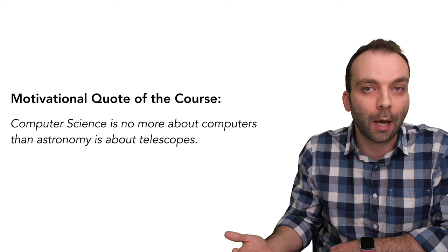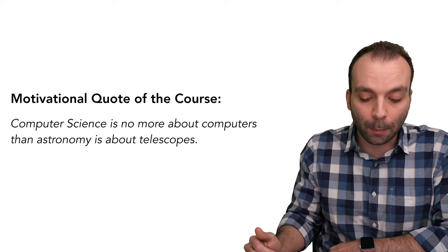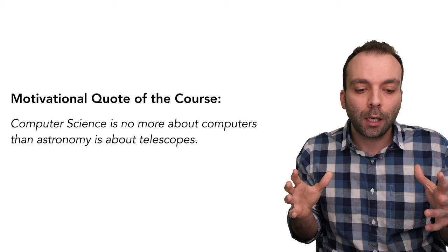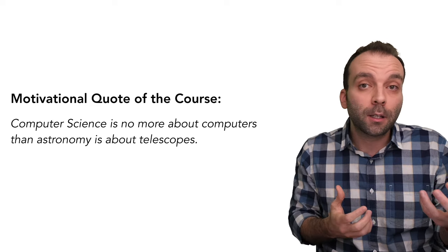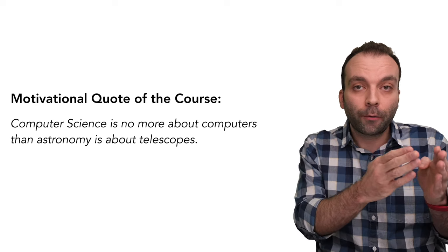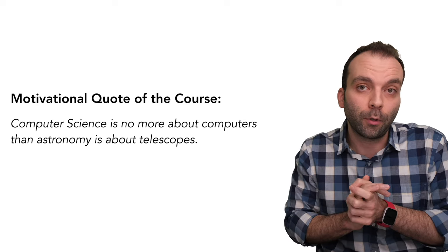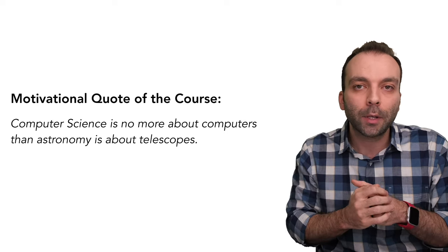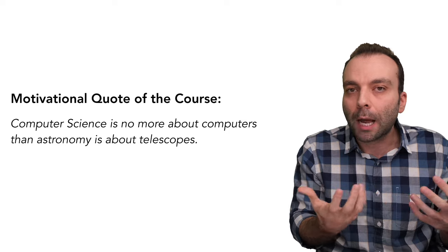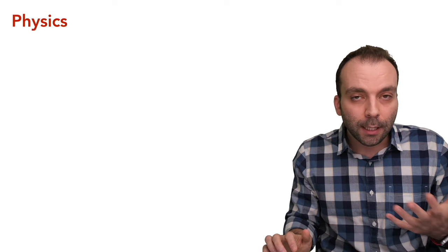This raises the question: if computer science is not really about computers, what is it about? It's not about our laptops, phones, or tablets — so what is it really about? To answer that, I'm going to draw a comparison between physics and computer science, and understand the role of theoretical physics within physics. I think this analogy will help us, because we may have better intuition about what physics studies.